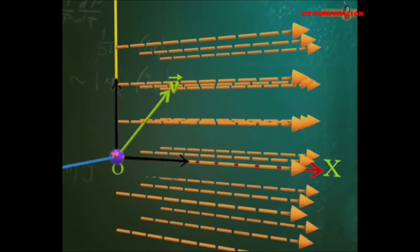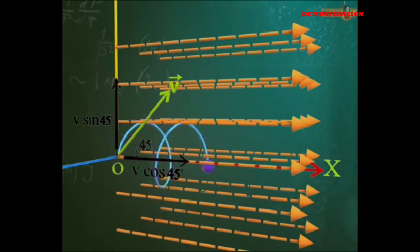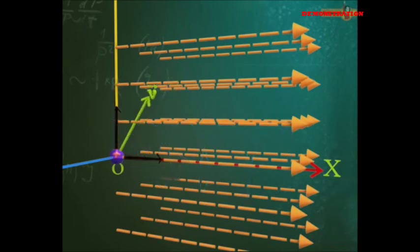As the angle theta between the velocity and the magnetic field increases, the radius increases as it depends on V sin theta, and the pitch decreases as it depends on V cos theta.